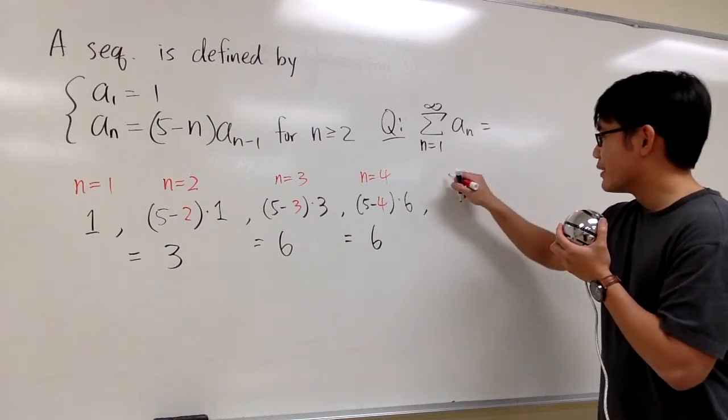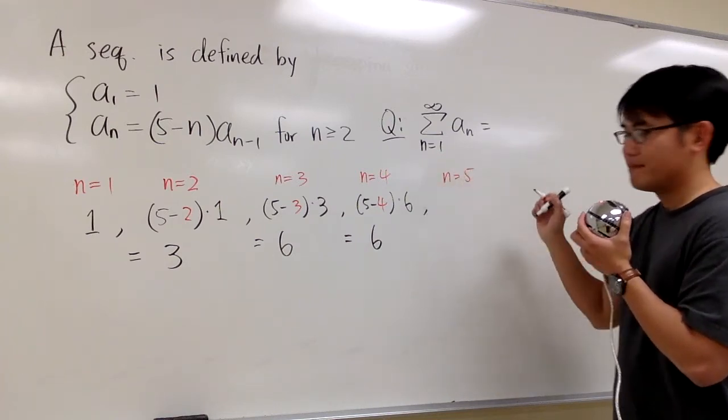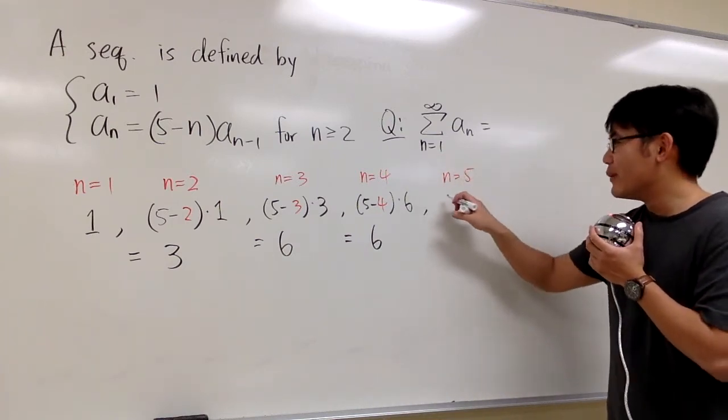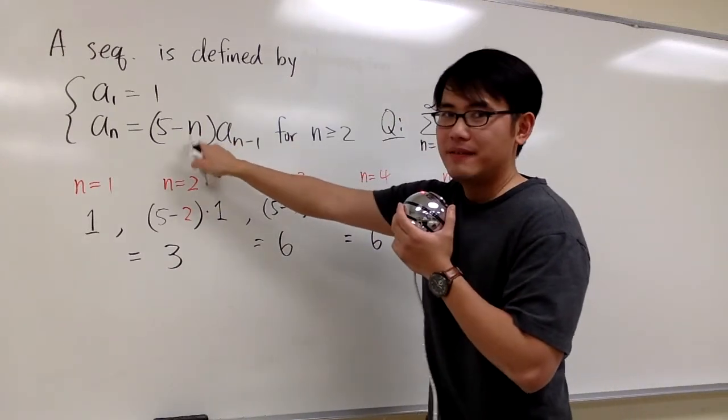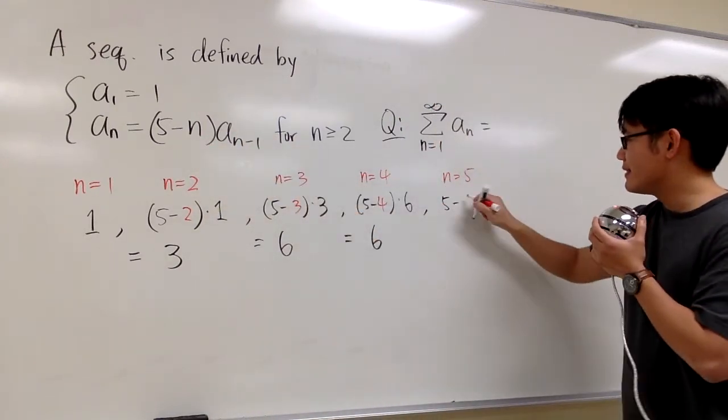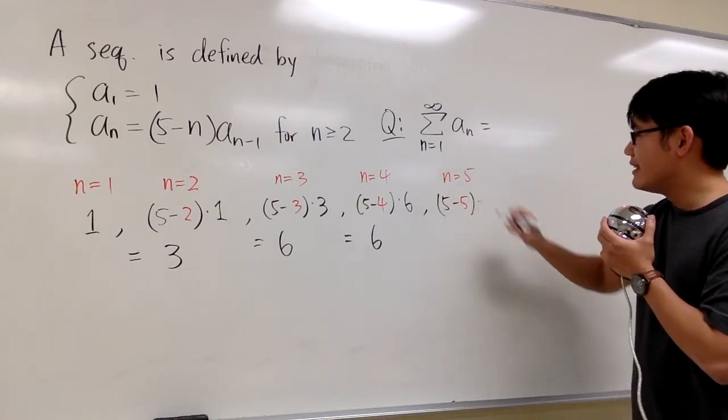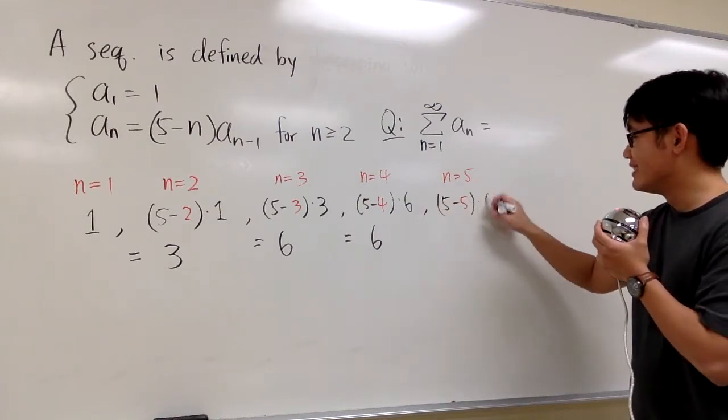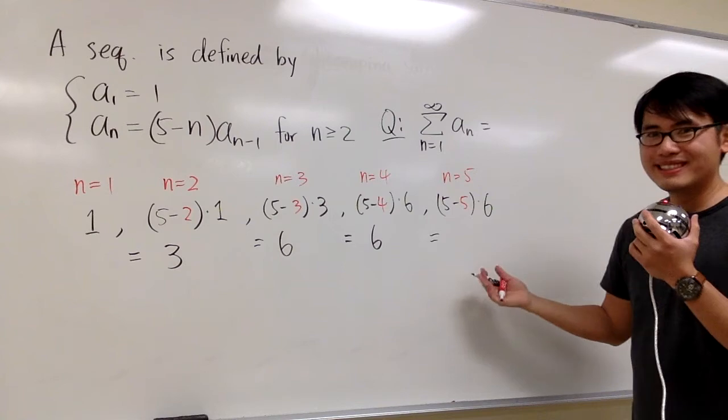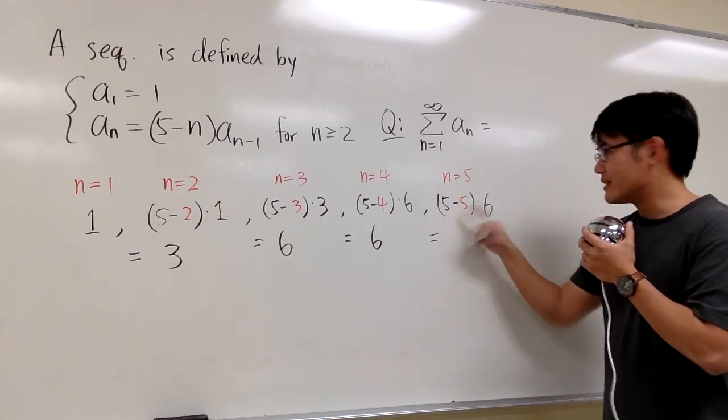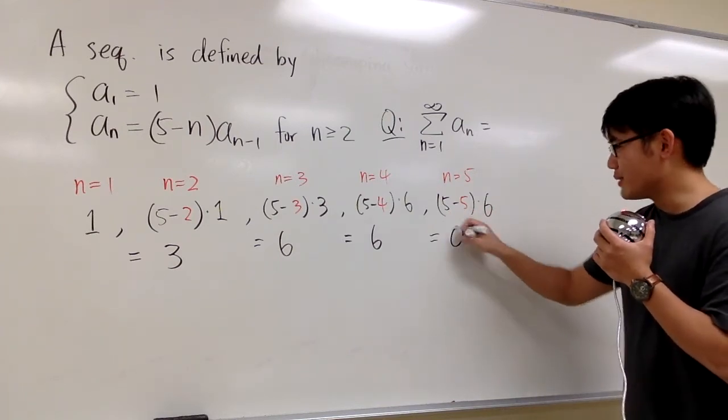Continue. When n is equal to 5, we have what? 5 minus 5. Okay? And then we multiply by the 6. And then what happens? This is 5 minus 5, which is 0, times 6, which is 0.